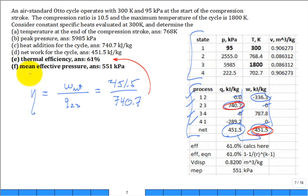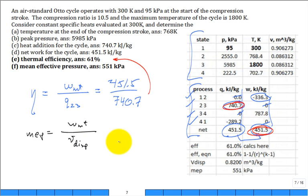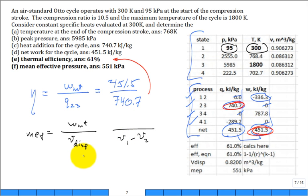The last part: what is the mean effective pressure? MEP = W_net / V_displacement. The displacement volume is V1 - V2. Knowing pressure and temperature, you can calculate specific volumes V1 and V2 from the ideal gas law, take their difference, and divide the net work by that. The result is a mean effective pressure of 551 kPa.